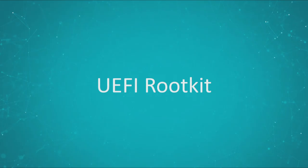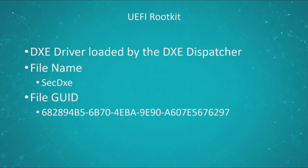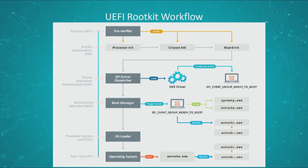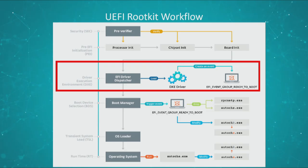Let's go back to the technical part of this presentation and look at the UEFI rootkit itself. The UEFI rootkit is a DXE driver that is loaded by the DXE dispatcher every time the machine boots. Its file name is SECDXE, as we've already seen. A UEFI firmware will go through multiple phases when it boots: the security phase, then the pre-EFI initialization phase, then the driver execution environment phase — and that's when it gets interesting for us. That's when the DXE core is running and all of the DXE drivers will be loaded. One of these DXE drivers will be the UEFI rootkit, and what it will do at this point is create an event attached to the EFI event group ready-to-boot, and it will bind a notify function, which is basically a callback containing the malicious code.